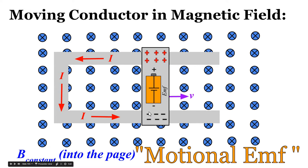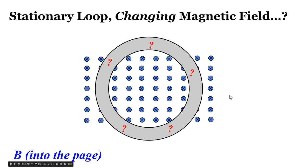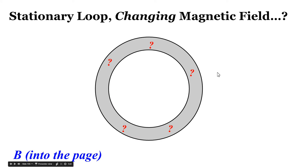Today we're going to look at other situations where we can induce a current in a loop of wire — not by moving part of that wire, but by changing something about the magnetic field. We're going to look at a round loop of wire, leave it stationary, and change the strength of the magnetic field inside of it. We'll look at what happens when we increase the strength, when the field stays constant, and when we decrease the strength, to see if there's any induced current.